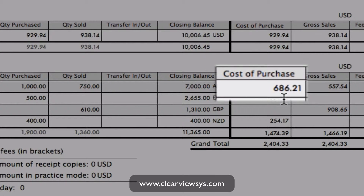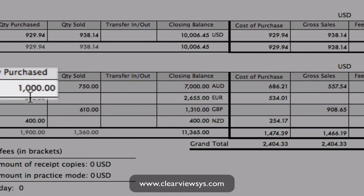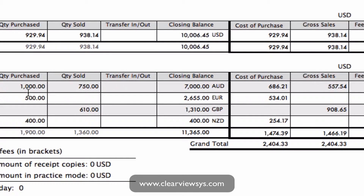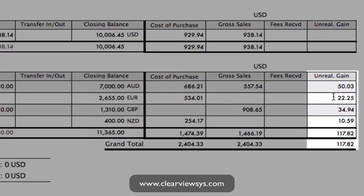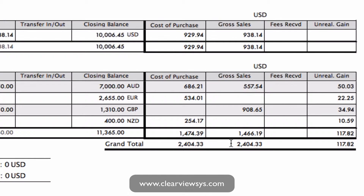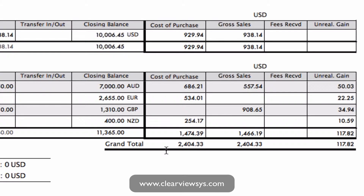Same goes for the cost of purchase — it cost us $686.21 in US dollars our home currency, but we purchased a thousand, so that's the equivalent in the home currency. You'll also notice at the very end we have the unrealized gain, based on the market value at the time of the transaction. At the bottom we also have the grand totals of our gross sales and cost of purchase. So a very simple, easy report.